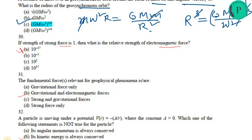The next question is about relative force strengths. If the strong force has strength 1, then the electromagnetic force is approximately 10⁻² of the strong force, so option B is correct. Remember which force is weakest and which force acts over the shortest distance.